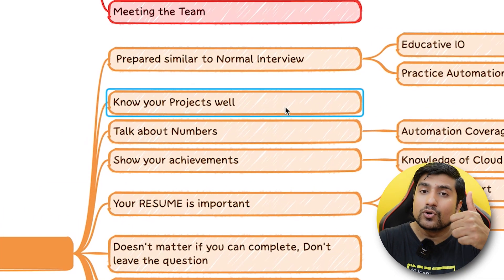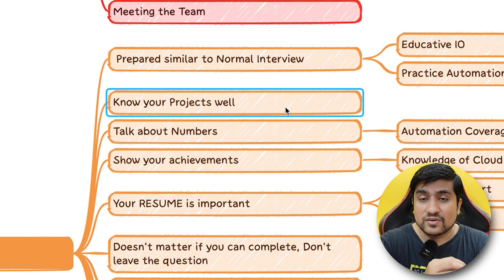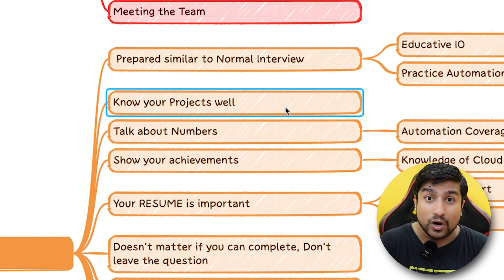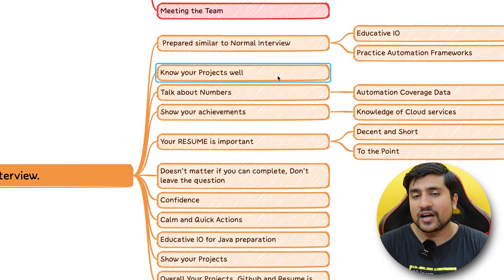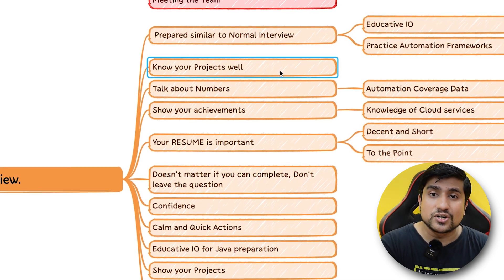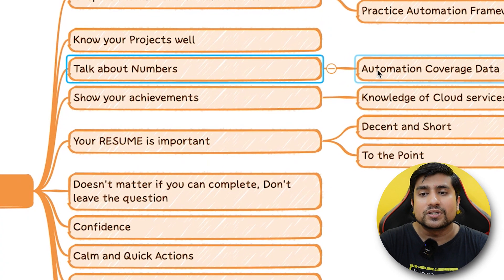You have to know your projects very well — this is really important. Whatever you've put on your resume, you should know every word of it. They asked me about Git, and since I'd mentioned C# for some projects, they asked me questions related to C# too. I didn't remember it well at the time. If you don't remember something, please remove it from your resume — that was one of my mistakes.